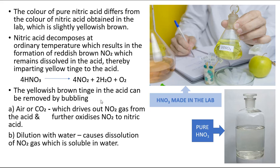This yellowish brown tinge can be removed by bubbling air or carbon dioxide through the acid, which drives out the nitrogen dioxide gas, or the nitrogen dioxide can be oxidized back to nitric acid. Alternatively, diluting with water causes dissolution of nitrogen dioxide gas, removing the yellow tinge, as nitrogen dioxide dissolves in water to form nitric acid.